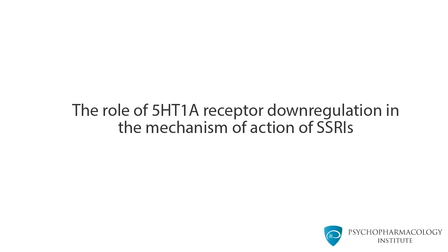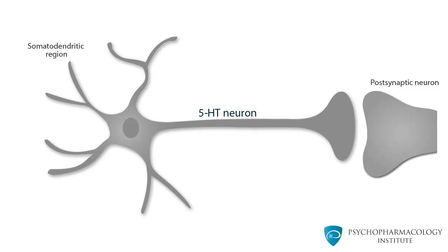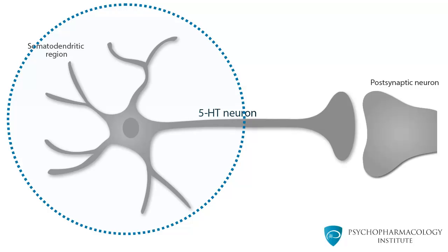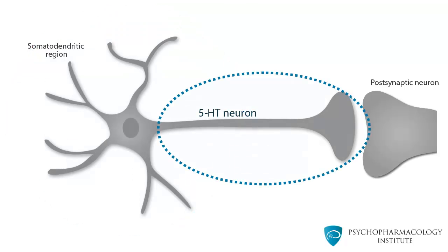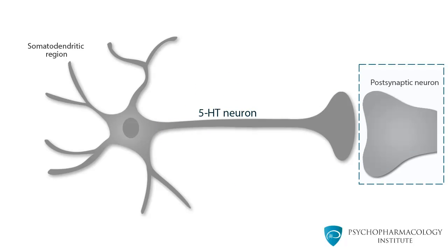We will discuss the role of 5-HT1A receptor downregulation in the mechanism of action of SSRIs. We'll begin by introducing some relevant features before starting with the effects of SSRIs. This image shows a serotonergic neuron. We can see the somatodendritic region, the axon, and the presynaptic terminal. Here is also depicted a postsynaptic neuron that is stimulated by the serotonergic neuron.